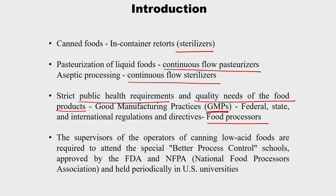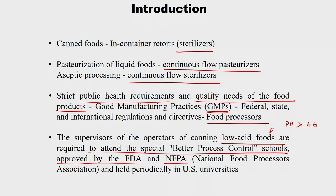The supervisors and operators handling the canning of low acid food — that is food with pH greater than 4.6, which is a favorable condition for Clostridium botulinum to survive — should attend special better process control schools approved by FDA (Food and Drug Administration) and NFPA (National Food Processors Association). These organizations offer short-term courses and better process control strategies periodically at US universities, and supervisors are required to attend.